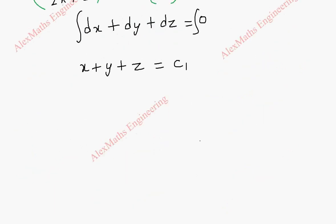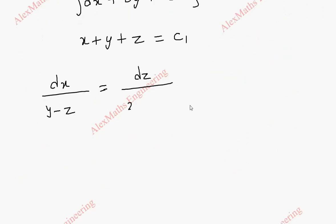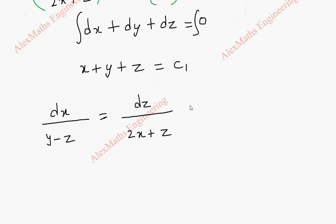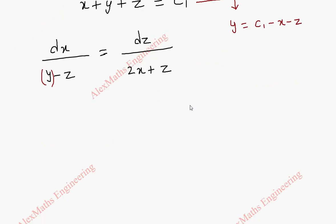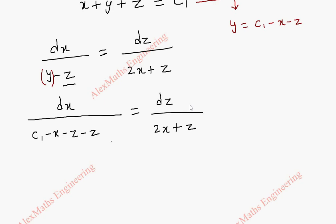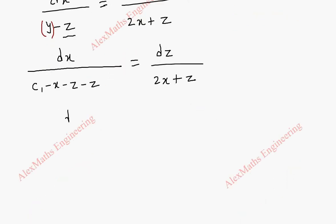So we have dx/(y−z) = dz/(2x+z). Since we have a y term, we take y from the first solution: y = c1 − x − z, and substitute it in. This gives dx/(c1−x−z−z) = dz/(2x+z), which simplifies to dx/(c1−x−2z) = dz/(2x+z).